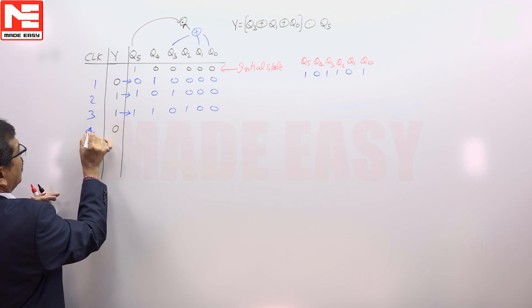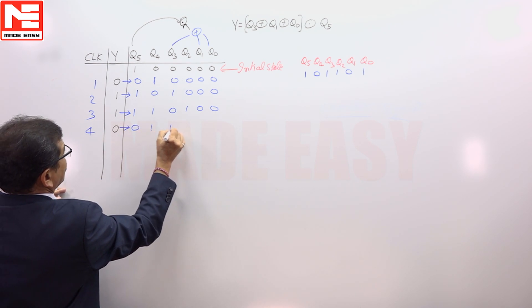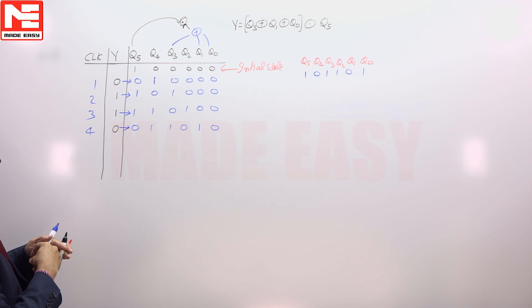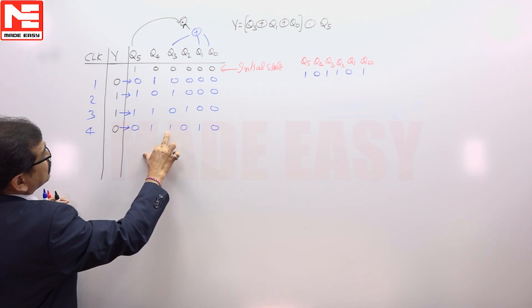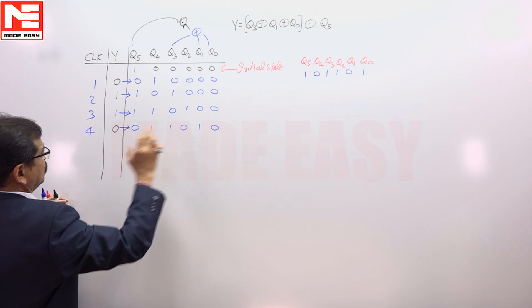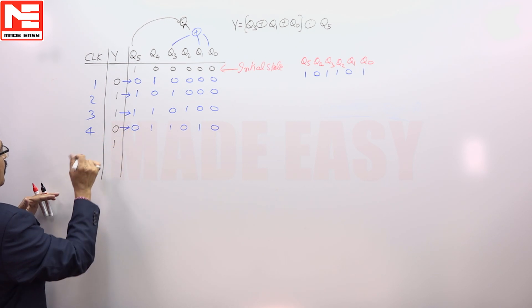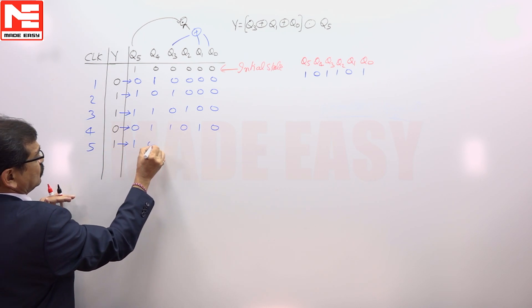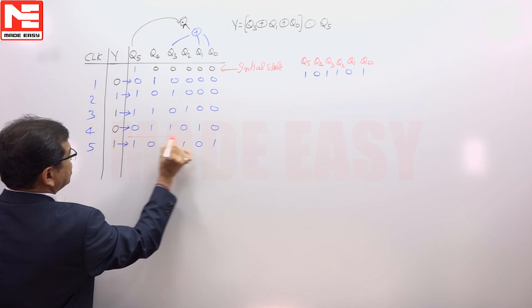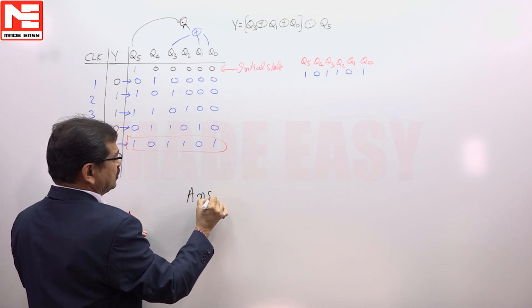Now if we apply the clock signal, the register content becomes 0 1 1 0 1. Continuing to the next clock pulse, the circuit reaches the required state 1 0 1 1 0 1 after the fifth clock pulse. Hence the answer to this question is 5.